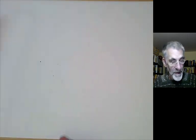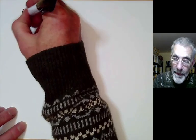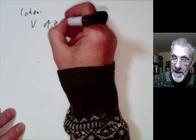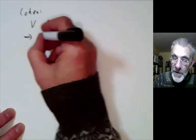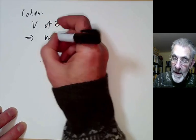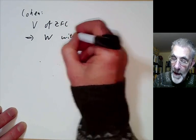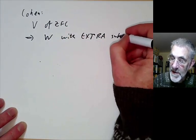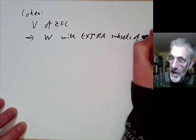On the other hand Cohen showed that given a model V of Zermelo-Fraenkel set theory we can find a new model W with extra subsets of omega.